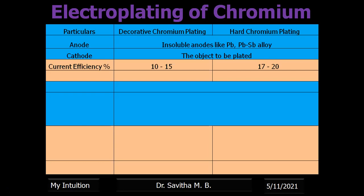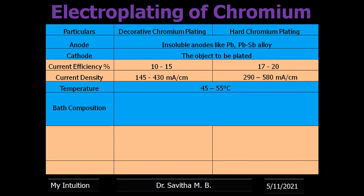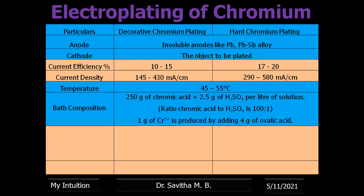Current density is 145 to 430 milliamps per centimeter squared. Current density means the current acting over unit area. If the current density is less, the thickness of the coating will be less — that is for decorative coating. If it is more, it is for hard coating. Temperature is 45 to 55 degrees Celsius.